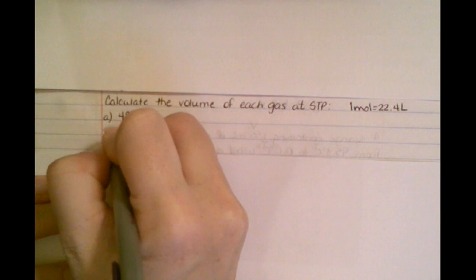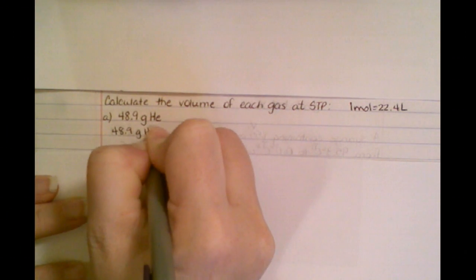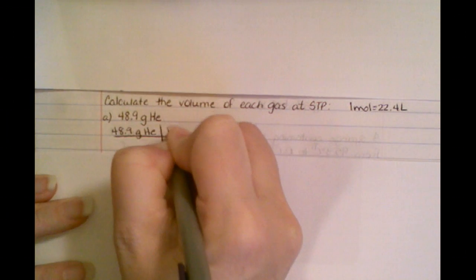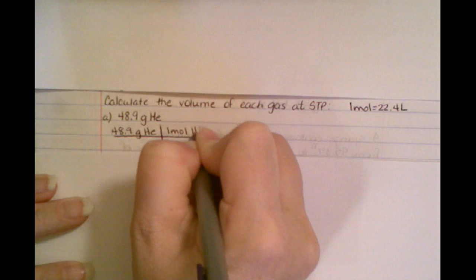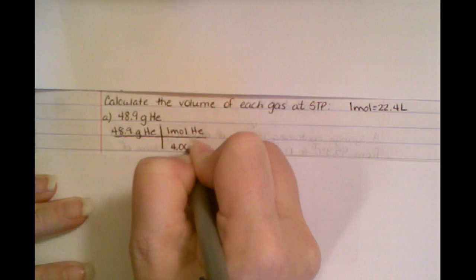So I'm going to start with a given. Remember, when in doubt, when you're dealing with grams, you always convert to moles. So we need to find out how much one mole of helium weighs. You get that off the periodic table.